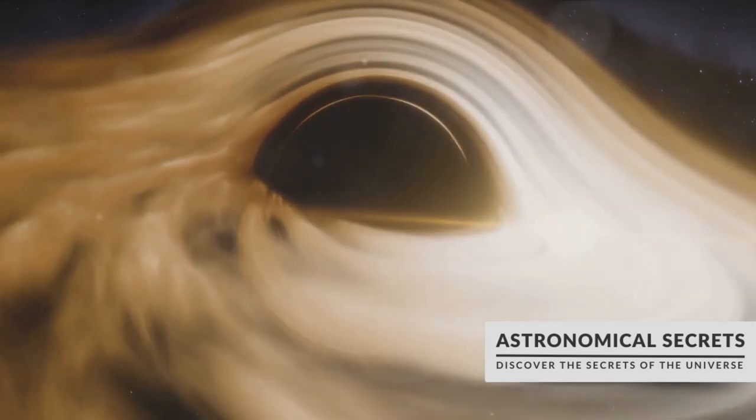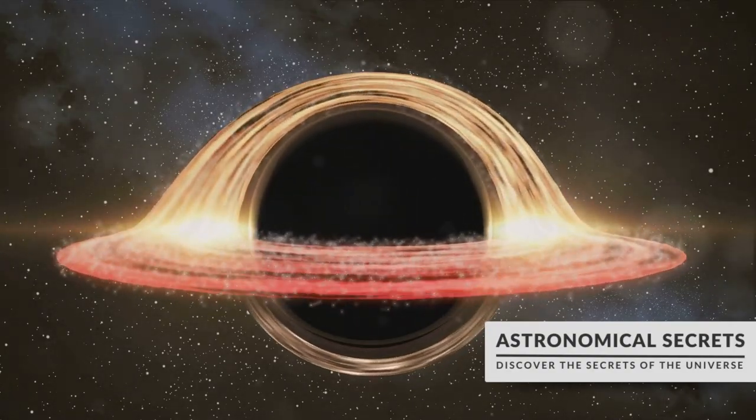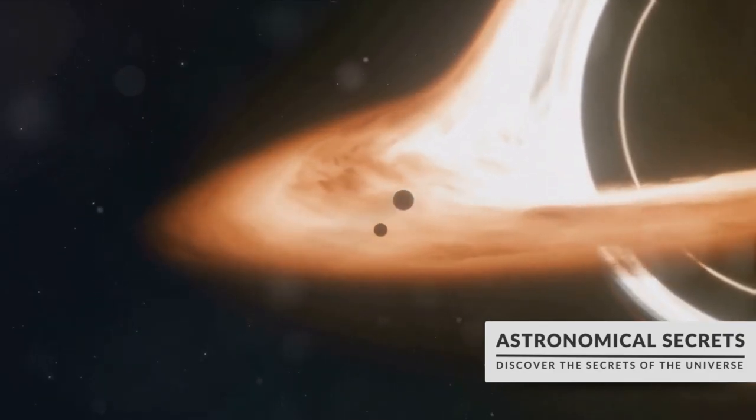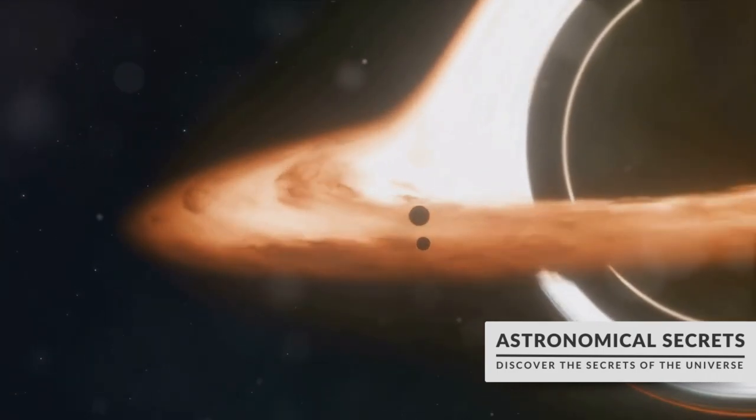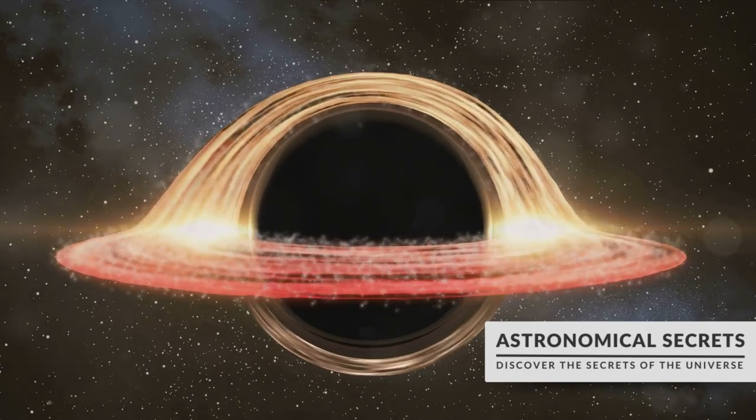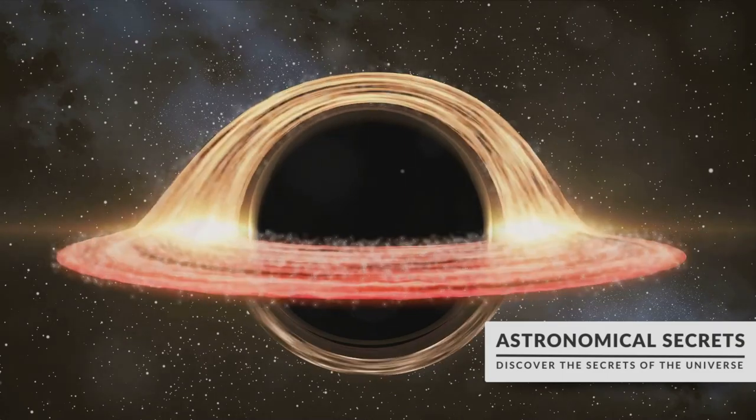First off, we have stellar black holes. These are the most common types formed from the remnants of massive stars. When such a star has burned out the last of its fuel, it collapses under its own gravity, creating a supernova explosion that can outshine an entire galaxy. What remains is a dense core, or if the core's mass is sufficient, it further collapses into a stellar black hole.